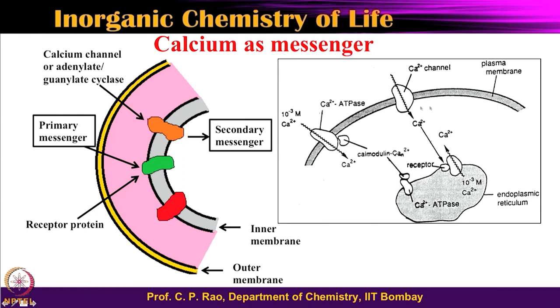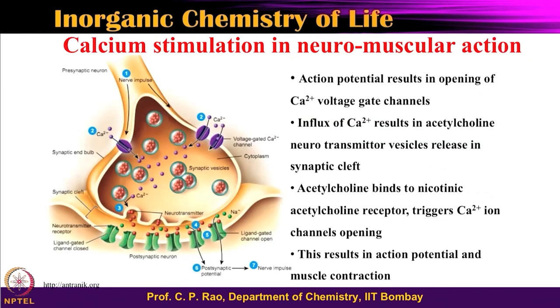The same thing is shown where calcium enters, goes through all this, and gets into the endoplasmic reticulum. All that we understand from this is calcium can act as a primary messenger and also as a secondary messenger. Calcium can activate calmodulin and do a large number of phosphorylation and dephosphorylation events. Calcium can give a primary messenger output and also give a secondary messenger output.